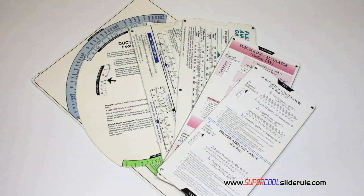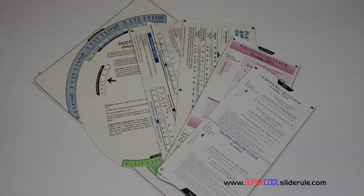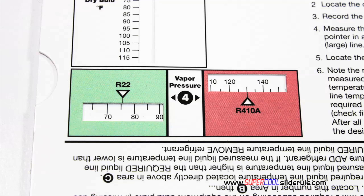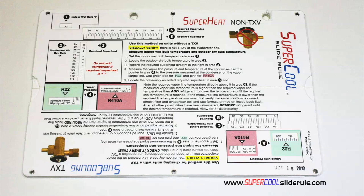Historically, technicians have carried four or five different slide rules — one for R22, one for R410A, one for metal duct sizing, one for flexible duct sizing, and yet others for diagnostics or troubleshooting. Thankfully, those days are gone. This one tool will allow you to charge a system with R22 or R410A in either the superheat or subcooling method.